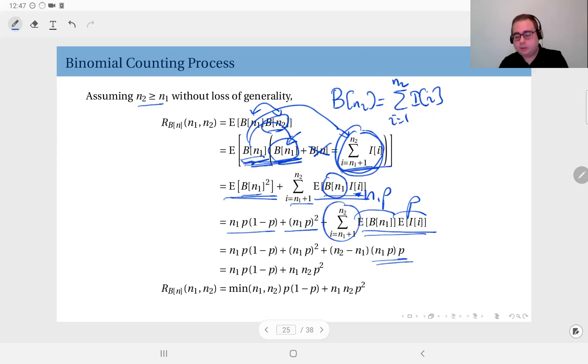Okay, and of these I have n2 minus n1 terms, such terms. So n2 minus n1 times n1 p times p. Okay, if you expand this expression, simplify, etc., what you get is n1 times p times 1 minus p plus n1 times n2 times p squared.